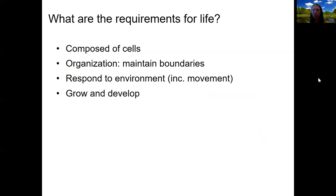All life must grow and develop. This involves cell growth, cell division, and then differentiation, which means cell specialization. The idea that we develop from babies to adults — that is development. In order for that to happen, our cells have to divide, grow, and then differentiate into different types. This even happens for bacteria at a simpler level: development from a young bacterium to an old one, and they don't live forever.